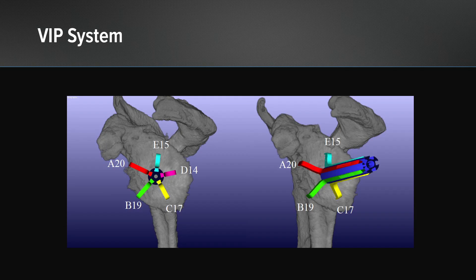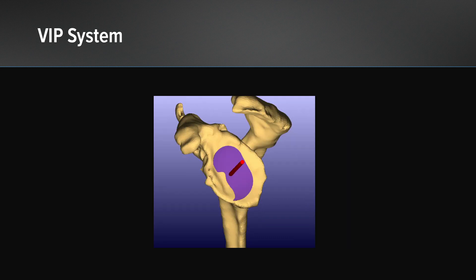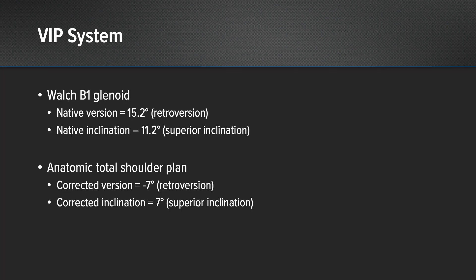This is where I decided the glenoid component should sit, and you can see the 5D calibrator demonstrated here in the preoperative plan. This is an unreamed view in three dimensions of where our glenoid component and polyethylene will sit. His native retroversion was around 15 degrees and in the plan I corrected this to around minus 7 degrees. His inclination of around 11.2 degrees of superior inclination was corrected down to about 7 degrees.